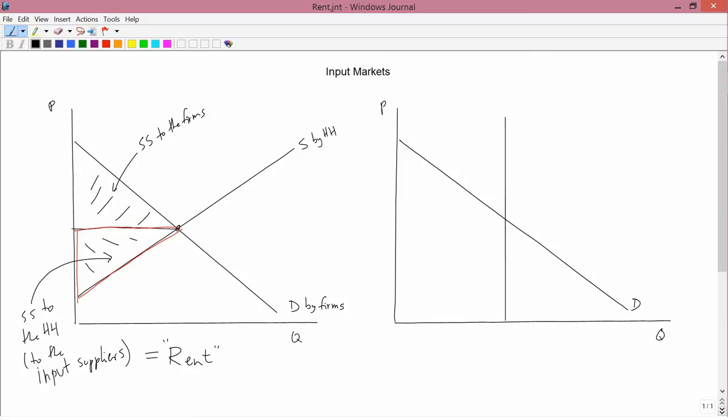So the name that we give the social surplus that goes to the input suppliers is rent. Now, sometimes it's called economic rent to distinguish it from the way that the word rent is used in everyday language. But since this is an economics class, I'll usually just call it rent instead of calling it economic rent.